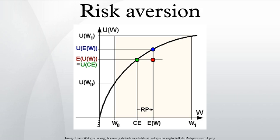The expected payoff for both scenarios is $50, meaning that an individual who is insensitive to risk would not care whether they took the guaranteed payment or the gamble. However, individuals may have different risk attitudes. A person is said to be risk averse if he or she would accept a certain payment of less than $50, rather than taking the gamble and possibly receiving nothing.